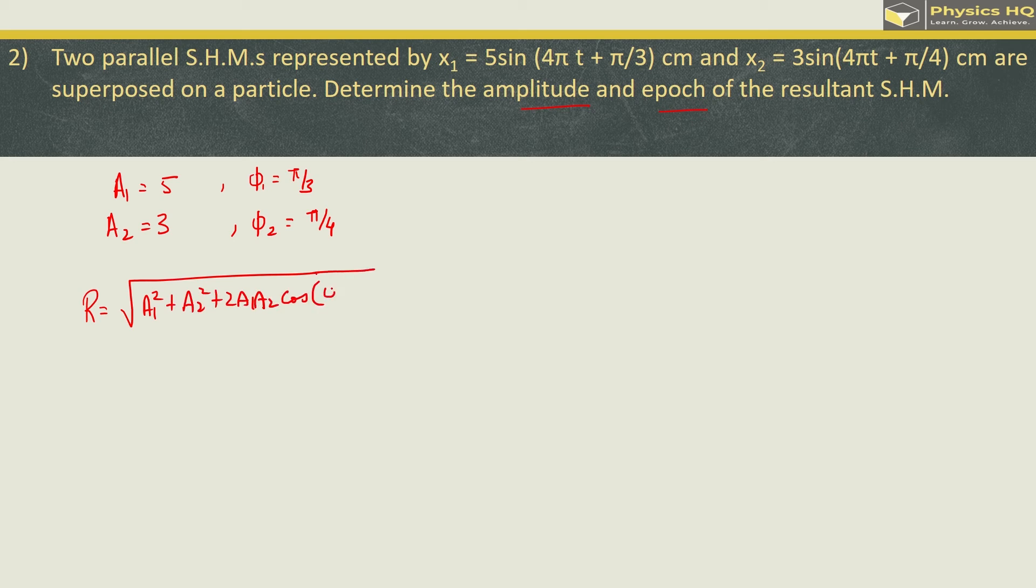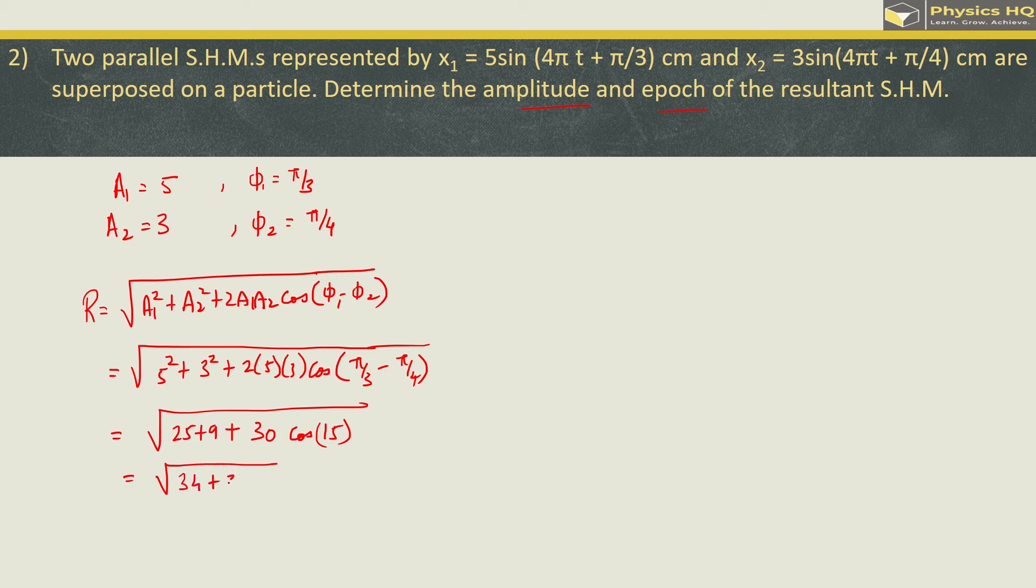So the resultant amplitude is given by the formula a1 squared plus a2 squared plus 2 a1 a2 into cos of the difference between their initial angles which is phi1 minus phi2. So here we get 5 squared plus 3 squared plus 2 times 5 into 3 into cos of pi by 3 minus pi by 4. So this is root of 25 plus 9 plus 30 cos of pi by 3 is 60 and this is pi by 4 which is 45 so we are left with cos of 15.